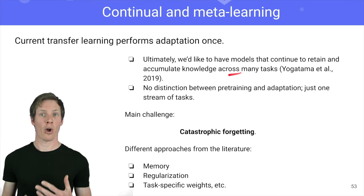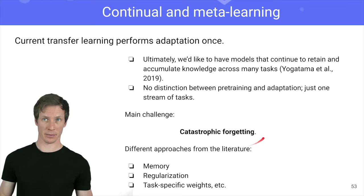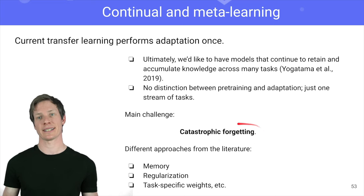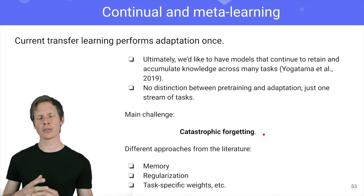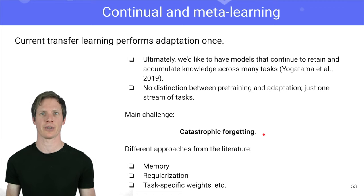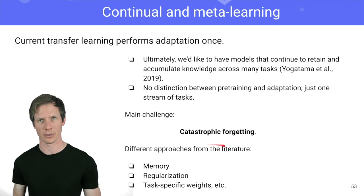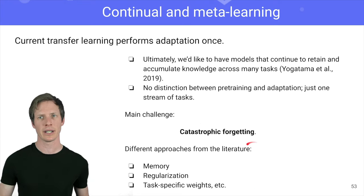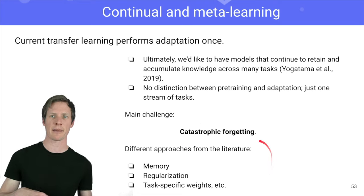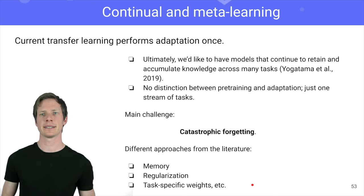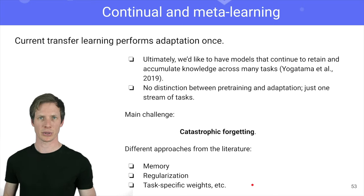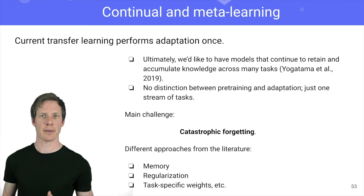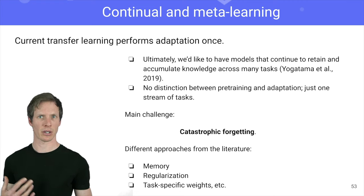There are a lot of people working on continual learning. The main problem is called catastrophic forgetting — you want to learn new stuff without forgetting everything you've learned before. There are different approaches to tackle this, from memory to regularization to dynamically growing models. This is probably the way NLP should go forward: to have models that are able to adapt and generalize to other domains as well.